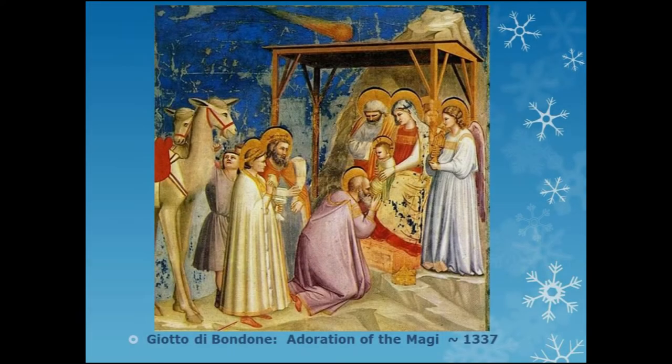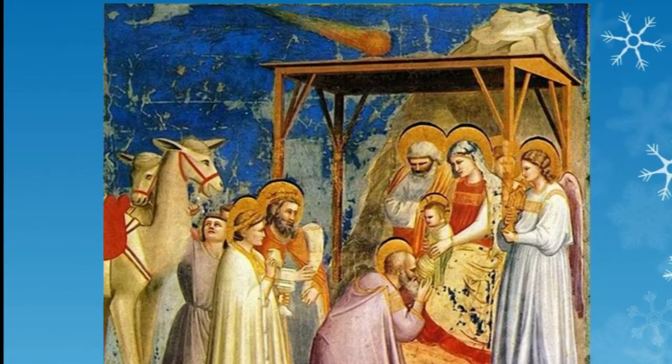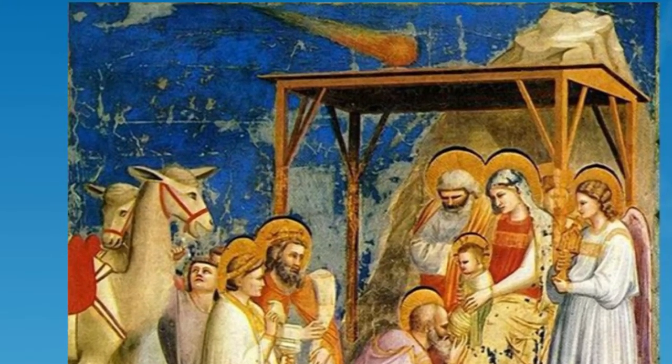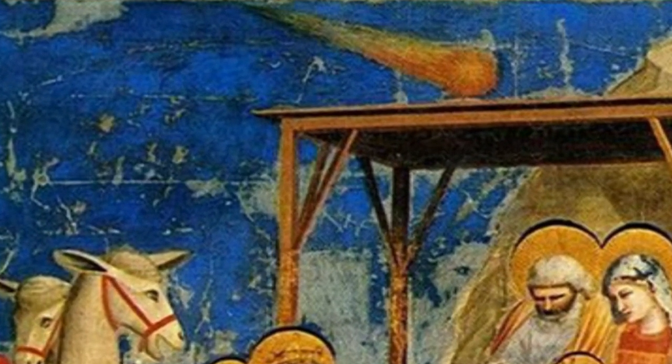Giotto Bondor was an Italian artist who sketched this comet around 1307 or so. Edmund Halley used this 400 years later to check the periodicity of 76 years of the comet named after him.